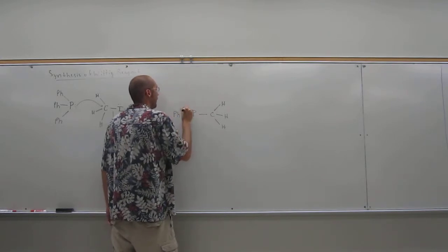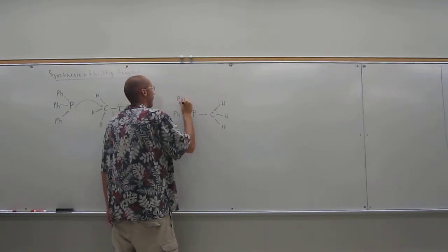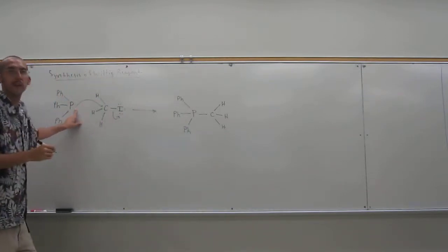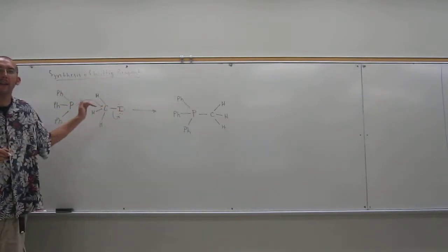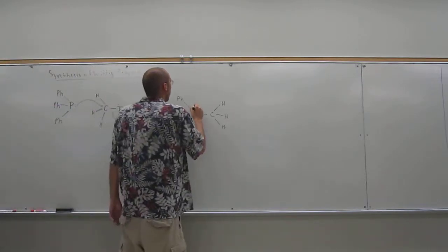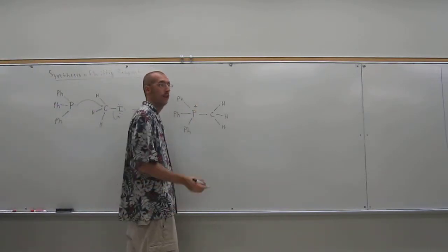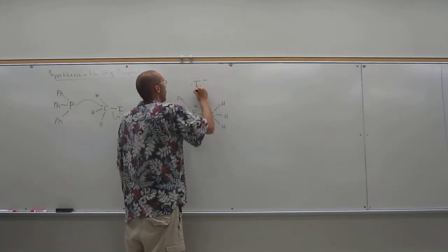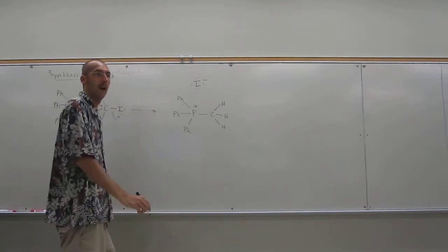So when you make that, phosphorus has these electrons that want to attack this carbon. And it'll make that a positive charge there, and the counter ion will be the iodide that came off.